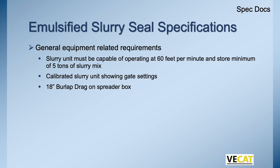Equipment-related specs: the slurry unit must be capable of operating at 60 feet per minute and store a minimum of five tons of slurry mix. It's got to be calibrated showing gate settings to ensure the right application rate. You've got to have an 18-inch burlap drag on the spreader box for final texture.